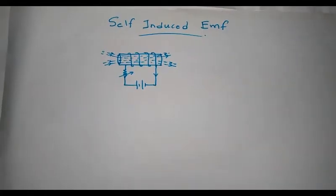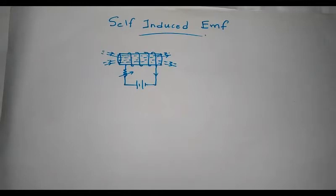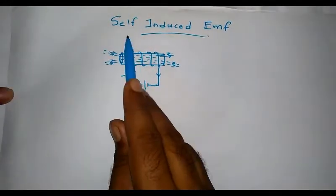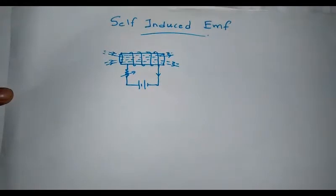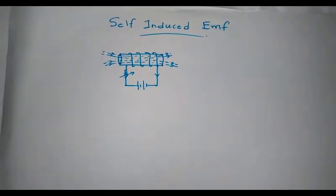Good morning. We have already learned that induced EMF due to Faraday's law is classified into statically induced EMF and dynamically induced EMF. Statically induced EMF is caused when the conductor is stationary and the magnetic field is varying. Statically induced EMF is classified into two types: self-induced EMF and mutually induced EMF. Let's go through self-induced EMF.